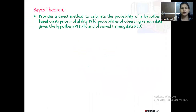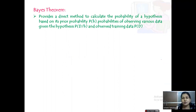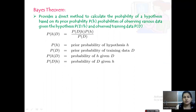It provides a direct method to calculate the probability of a hypothesis based on its prior probability p(h), and probability of observing various data given the hypothesis p(d|h) and observed data p(d). Formally, this can be stated as p(h|d) = p(d|h) * p(h) / p(d), where p(h) is the prior probability of hypothesis h.